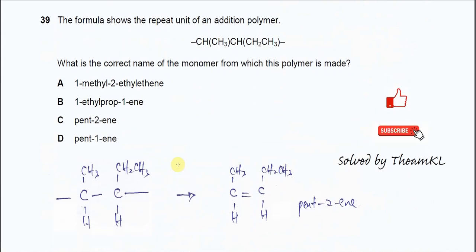Question 39. The formula shows the repeat unit of an addition polymer. What is the correct name of the monomer from which this polymer is made? It needs the name of the monomer.